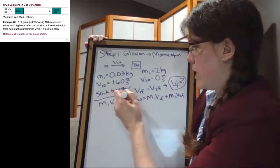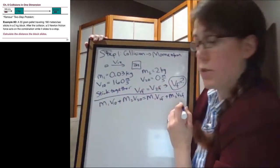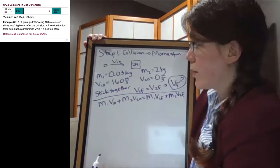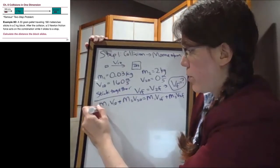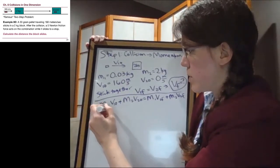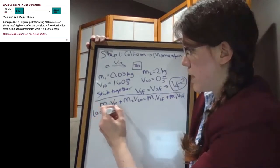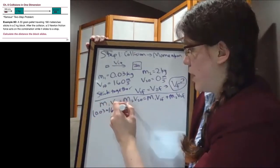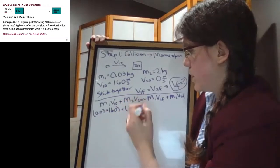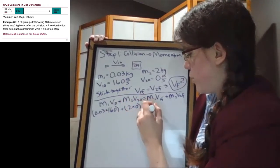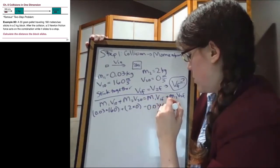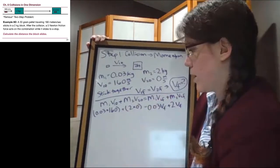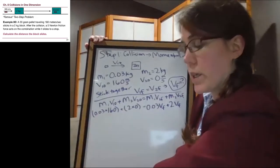We write it out: m1 v1 initial plus m2 v2 initial equals m1 v1 final plus m2 v2 final. And then we can plug in numbers. So we have the 0.03 kilograms times 160 meters per second, we have the two kilograms times zero, then we have 0.03 v final plus two v final.